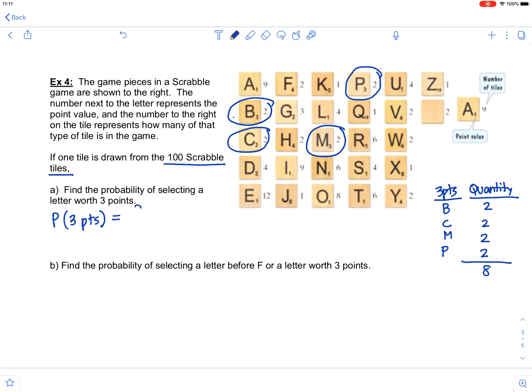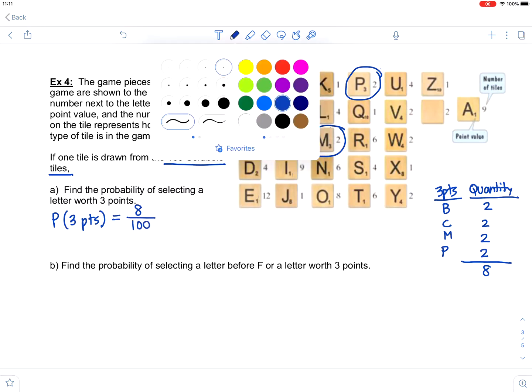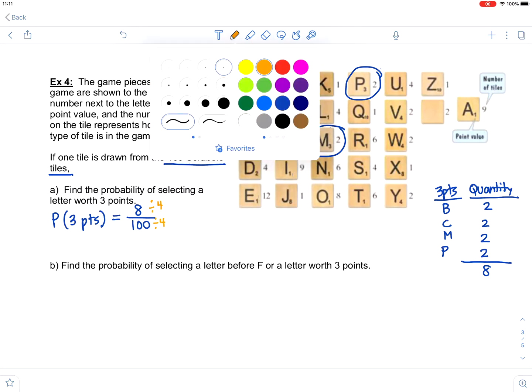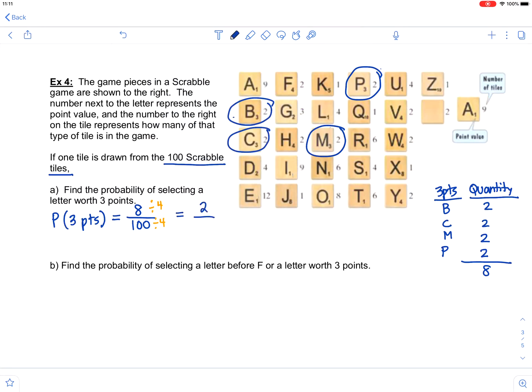So that probability would be eight out of 100, which then we can reduce by dividing by four. And that probability reduces to two out of 25.